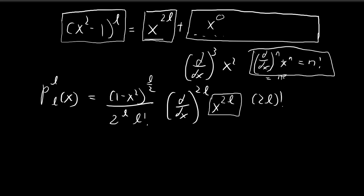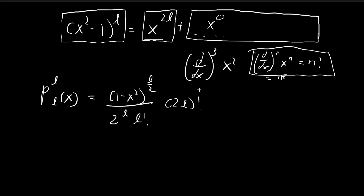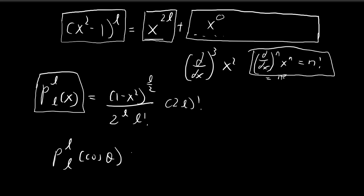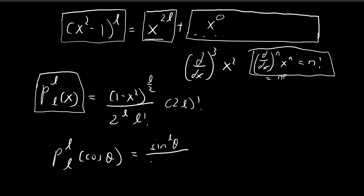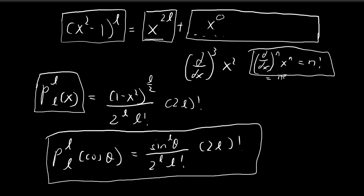So our P_L^L(x) — the associated Legendre polynomial — is (1-x²)^(L/2) divided by 2^L·L!, times (2L)!. Now substituting x = cosθ, we get (1 - cos²θ)^(L/2) = sin²θ raised to the power L/2. The square cancels with the 2 in the exponent, leaving sinθ to the power L. So P_L^L(cosθ) = (2L)! · sin^L(θ) / (2^L · L!).